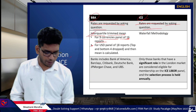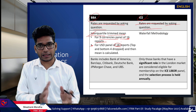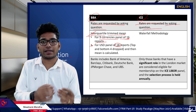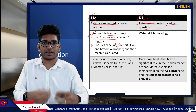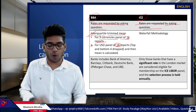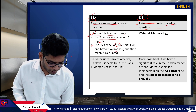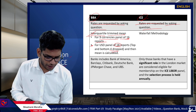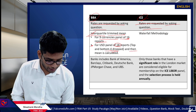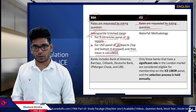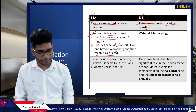For USD, because there were 18 panel banks, you cannot directly call it interquartile. So the rule was: drop the top four and bottom four and then calculate the mean. This was the process for the BBA.